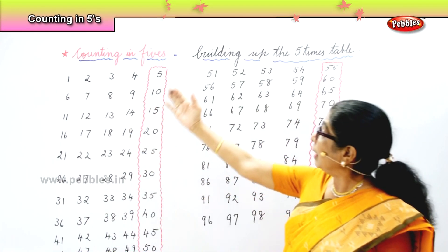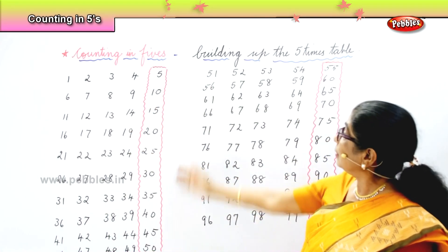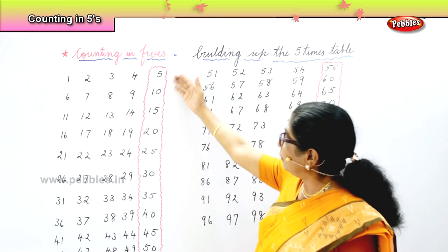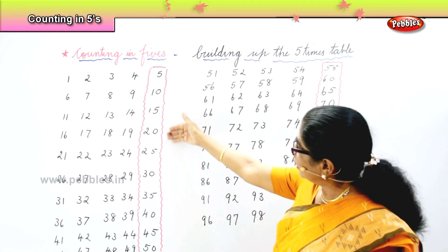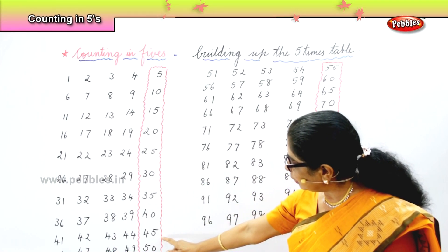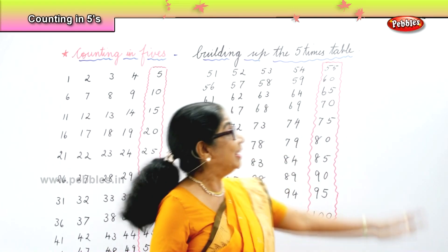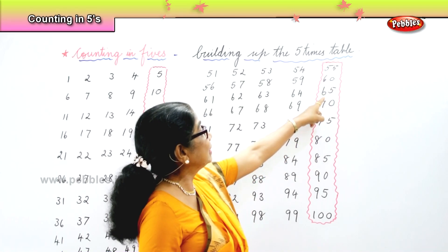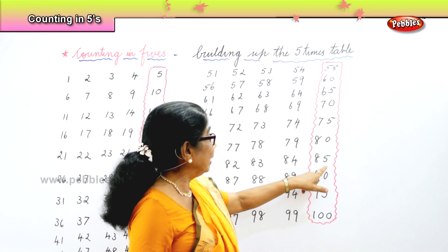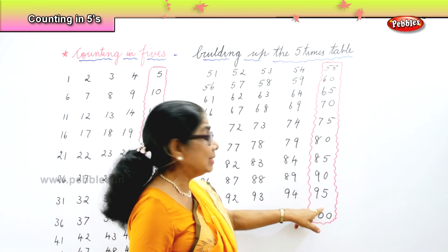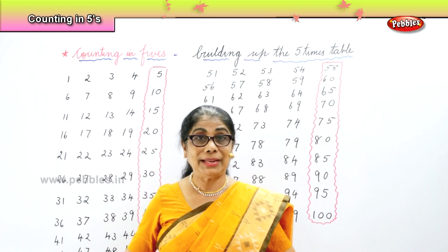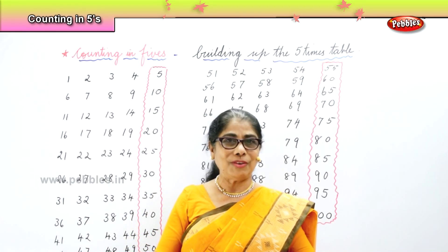Look, you have counting in fives. Building up the five times table: five, ten, fifteen, twenty, twenty-five, thirty, thirty-five, forty, forty-five, fifty, fifty-five, sixty, sixty-five, seventy, seventy-five, eighty, eighty-five, ninety, ninety-five, one hundred. You get all the five times table — skip counting of fives!